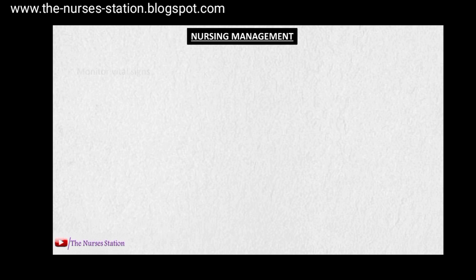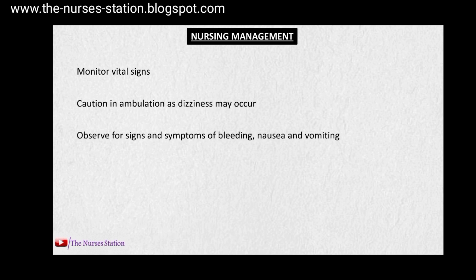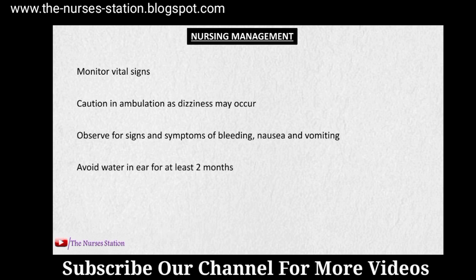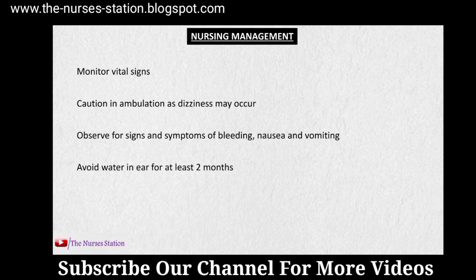Nursing management includes monitoring of vital signs to gain insight into the patient's condition and establish a database of the patient's status. Caution in ambulation is required as dizziness may occur — after surgery, care must be taken when ambulating the patient as they may feel dizziness and may fall. Observe for signs and symptoms of bleeding, nausea, and vomiting as these may indicate complications. Avoid water in the ear for at least two months as this may cause infection. Administer antibiotics for infection control and analgesics for pain control.